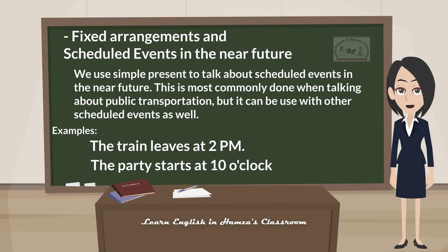We use simple present to talk about scheduled events in the near future. This is most commonly done when talking about public transportation, but it can be used with other scheduled events as well. The train leaves at 2 p.m. The party starts at 10 o'clock.